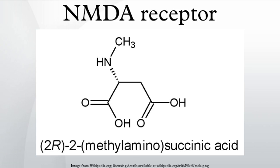Structure: the NMDA receptor forms a heterotetramer between two GluN1 and two GluN2 subunits — two obligatory NR1 subunits and two regionally localized NR2 subunits. A related gene family of NR3A and NR3B subunits have an inhibitory effect on receptor activity. Multiple receptor isoforms with distinct brain distributions and functional properties arise by selective splicing of the NR1 transcripts and differential expression of the NR2 subunits. Each receptor subunit has modular design, and each structural module also represents a functional unit. The extracellular domain contains two globular structures: a modulatory domain and a ligand-binding domain.